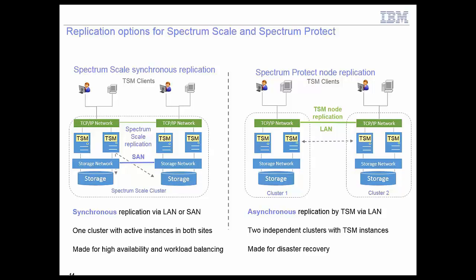These are the replication options we typically see. It depends on what the client is already using. For example, one client used Logical Volume Manager across two sites — it's very simple to position Spectrum Scale synchronous replication in that case. If a client uses node replication, it's more natural to position node replication as the solution. We also have clients who want to flip from an LVM-based mirror into node replication. This is part of the client requirement which needs to be considered to make a proper solution design.